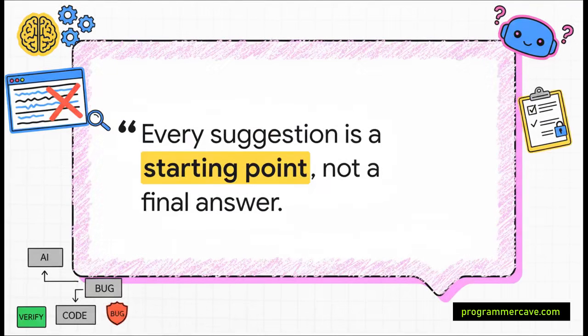And this right here, this quote, is the golden rule. If you take away only one thing from this, let it be this. Whether you're a junior dev or a senior architect, you have to treat every single line of AI-generated code as a suggestion to be reviewed, not a final command to be followed. This way of thinking doesn't just save you from bugs, it forces you to understand the code better, which makes you a better developer, period.